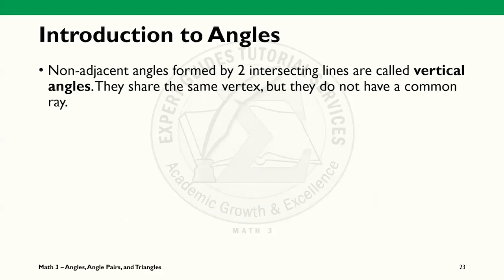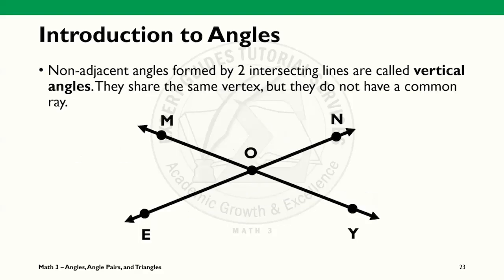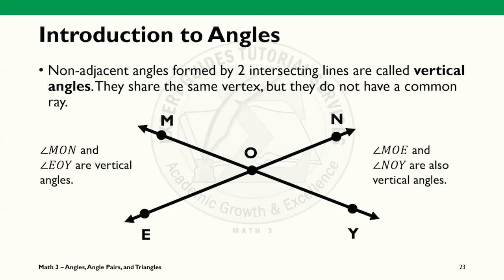When we intersect two lines, we can form vertical angles. The non-adjacent angles formed are the vertical angles. They share the same vertex, but do not share a common ray. In this case, we see that angle MON and angle EOY are the vertical angle pairs, as well as angle MOE and angle NOY. Vertical angle pairs have equal measurements.